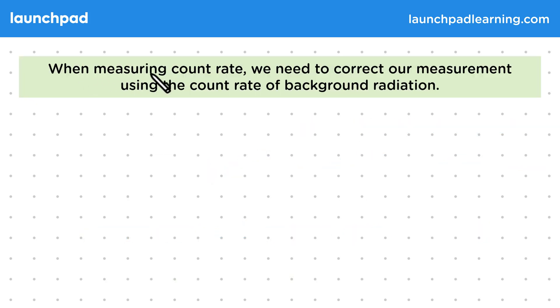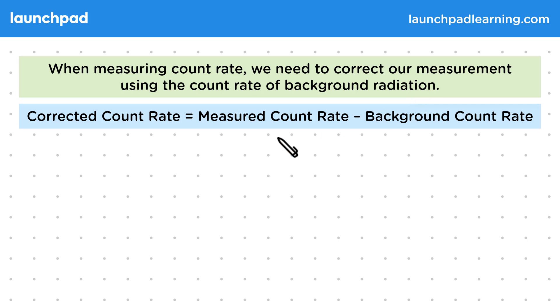Well, when measuring the count rate we need to correct our measurement using the count rate of the background radiation. So the corrected count rate is equal to the measured count rate minus the background count rate.